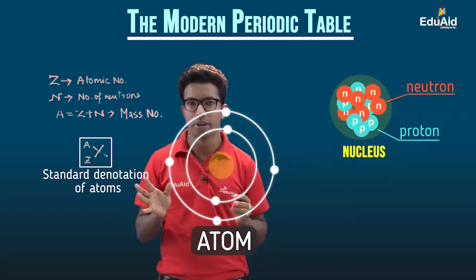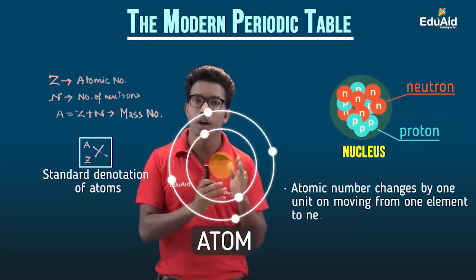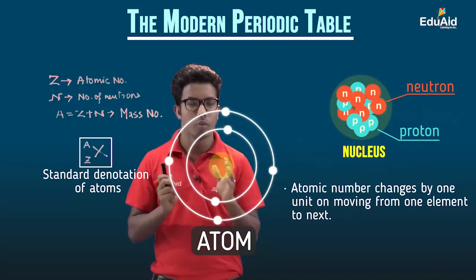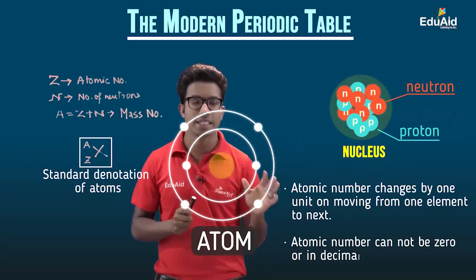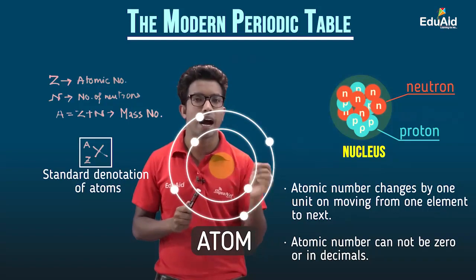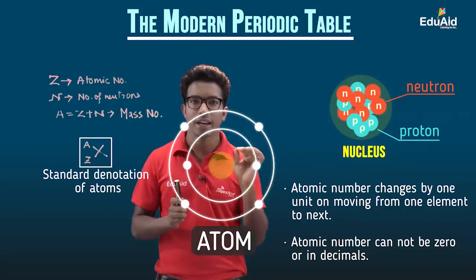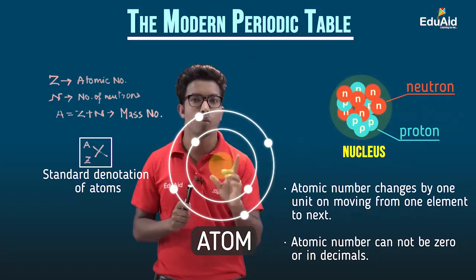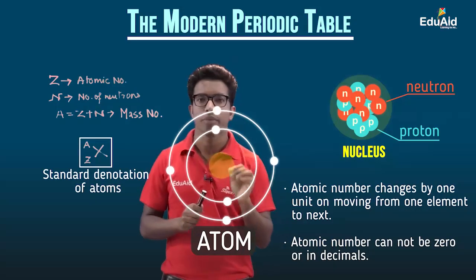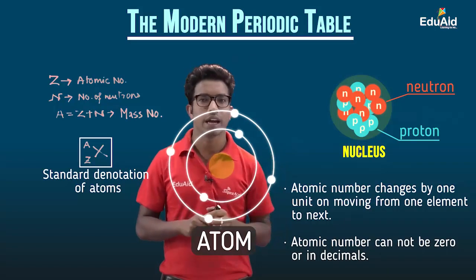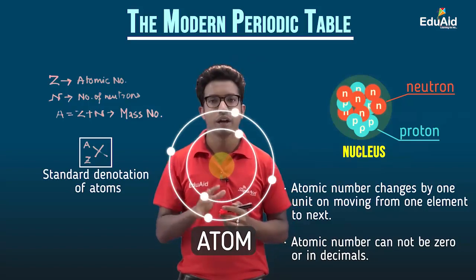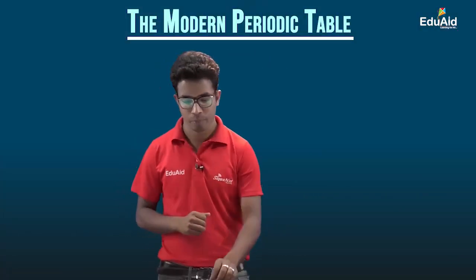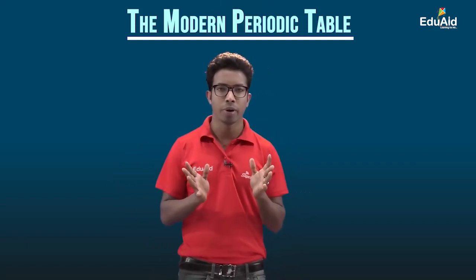Now we know what atomic number is. Atomic number changes by one unit when we move from one element to the next, meaning there is an addition of one proton. That is why atomic number is always 1, 2, 3 — it cannot be zero and cannot be a decimal, because you cannot add half or a fraction of a proton. There is always an addition of one proton when moving to the next element, so atomic number is always a natural number. When all the elements are arranged with increasing atomic number, we get the modern periodic table, which is based on atomic number.